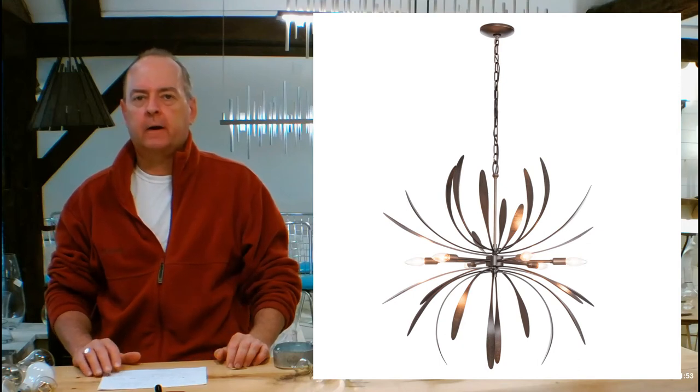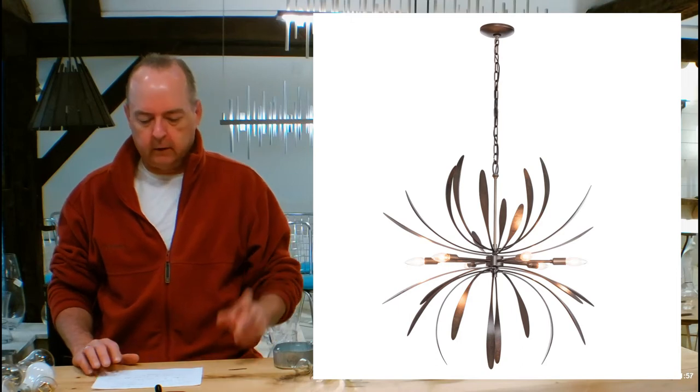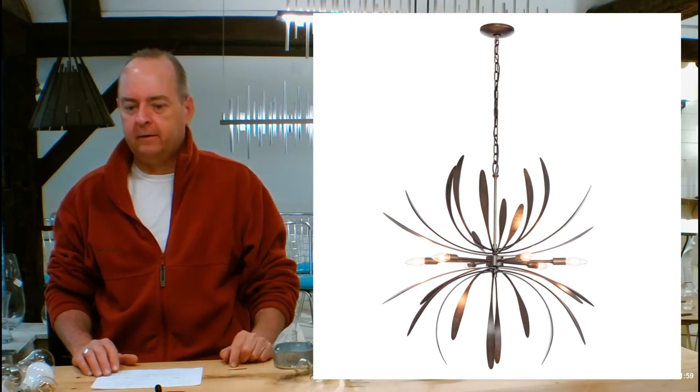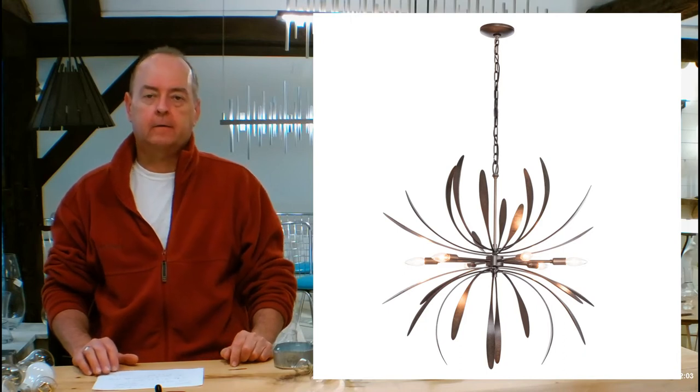Hi there, I'm Christopher Dunn again. This is handmadeinvermont.com and today we're talking about the Hubberton Forge Dalio Chandelier. This is going to be the smaller of the two sizes, style number 104350. Let's get into the details on it.